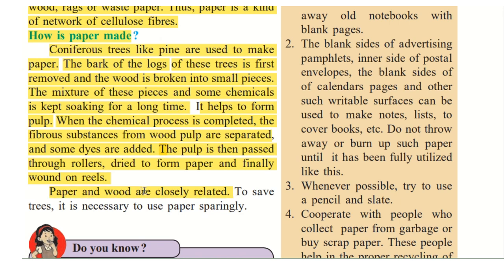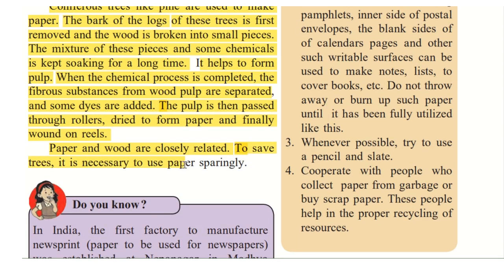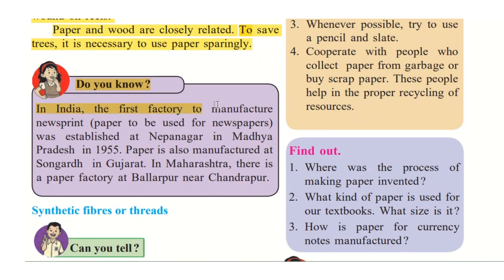Paper and wood are closely related — we make paper from wood, and we have seen that coniferous trees are cut down to make it. To save trees, it is necessary to use paper sparingly, meaning in a proper manner, only when required, without wasting paper. In India, the first factory to manufacture newsprint — that is paper used for newspapers — was established at Nepanagar in Madhya Pradesh in 1955.